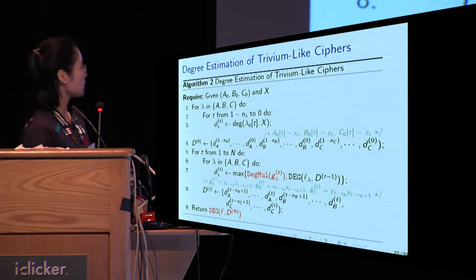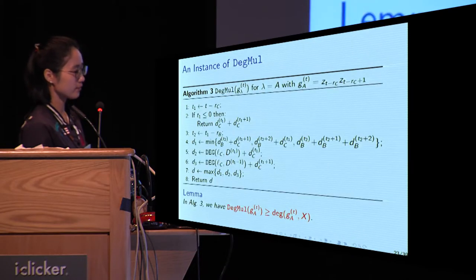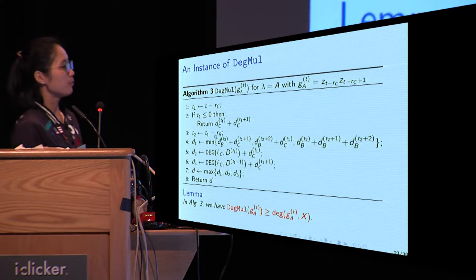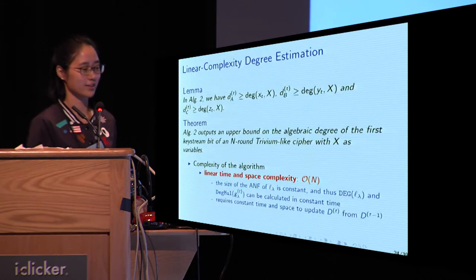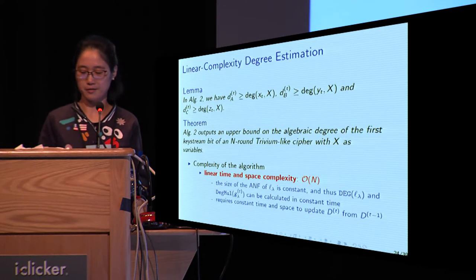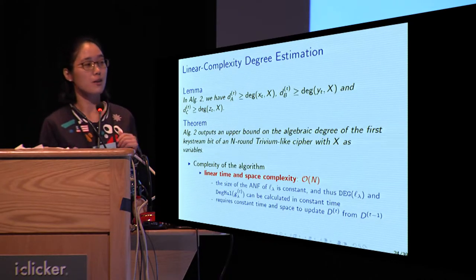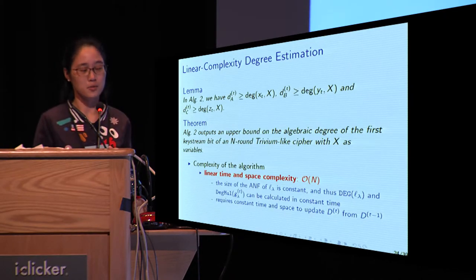This estimation is described in Algorithm 2. Algorithm 3 provides an instance of DIGMAR. Underlying this algorithm, there are several lemmas proved in the paper. Based on these lemmas, we can prove that Algorithm 2 outputs an upper bound on the algebraic degree of the first keystream bit for an N-round Trivium-like cipher. Notably, Algorithm 2 has linear time and memory complexity.